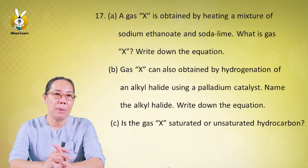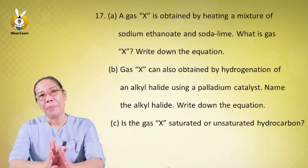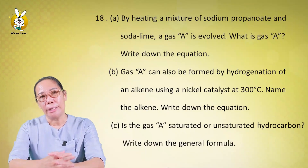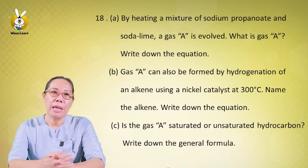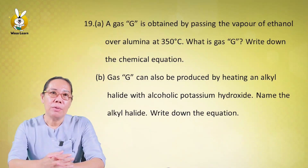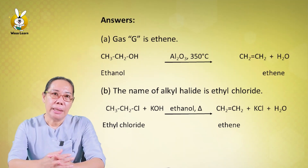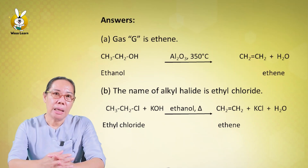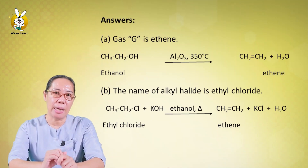If you have a Pd catalyst, you can answer this question. Number 18 and number 19: gas using aluminum at 350°C is used for dehydration. It's only 30% of our alcohol, and we need to address the dehydrogenation rate.